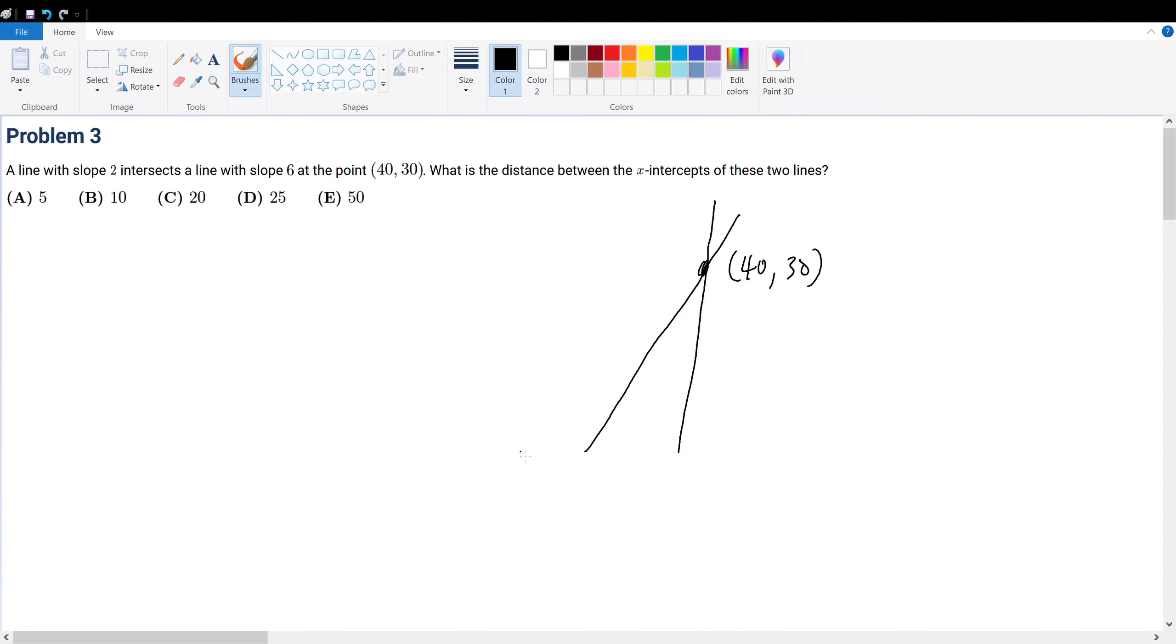We are trying to find the distance between their x-intercepts. So, let's say that's the x-axis. We're trying to find this point and this point's distance. How do you do that?